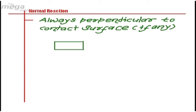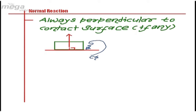Say this is a block which is kept on this horizontal surface. Here, as I can say this red surface is the contact surface to which this body is in contact. So, if the contact surface is this, then normal reaction will act perpendicular to it.